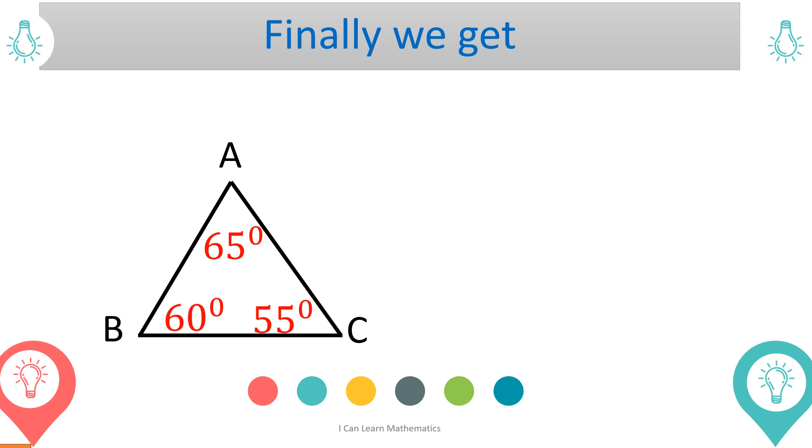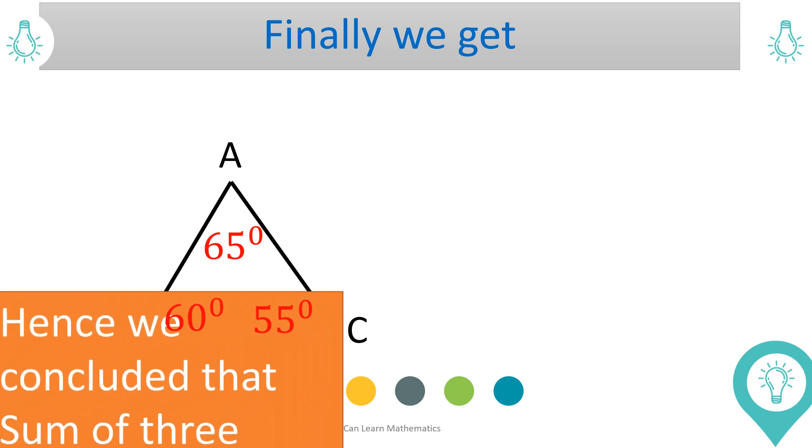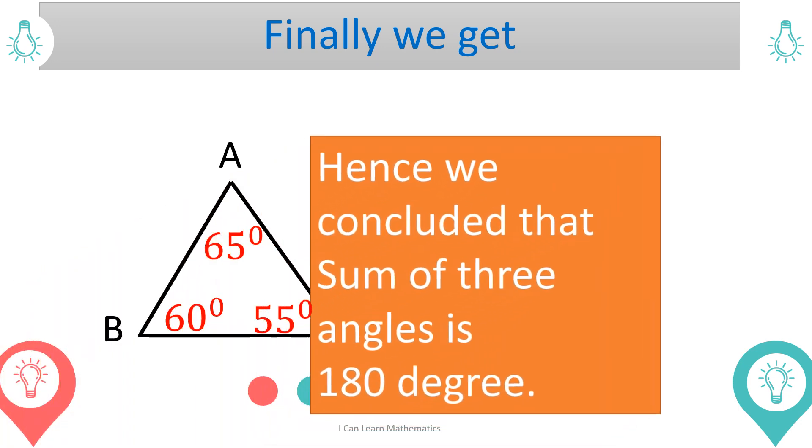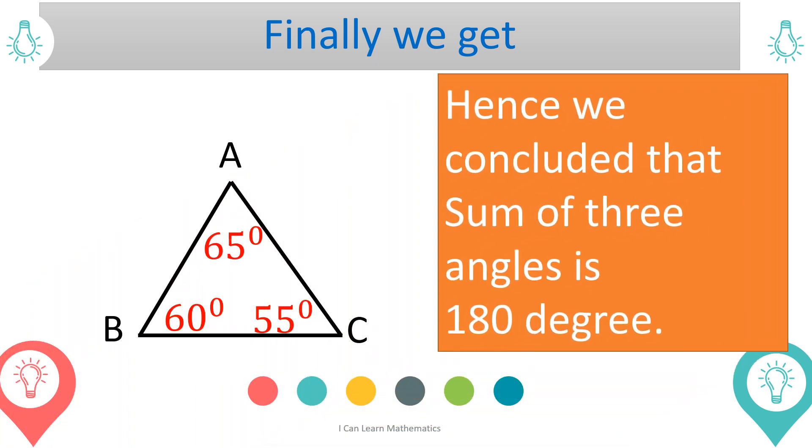Hence, we conclude that the sum of three angles of a triangle is 180 degrees. In this way, we can prove that the sum of three angles of a triangle is 180 degrees.